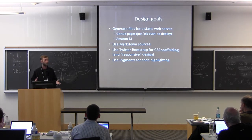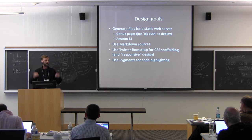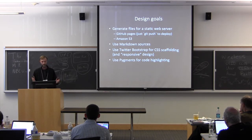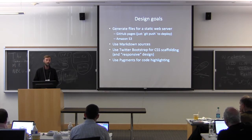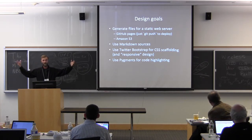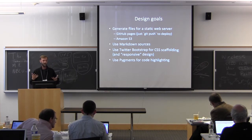The design goals were what you would expect for a static blog generator. Generate files for a static web server — for example, using GitHub Pages, you can commit and push to GitHub and they automatically appear on the web. Maybe you would copy the files to Amazon S3, or use a traditional web server like Racket web server or Apache. The other idea was to write the blog post in Markdown, which I like for writing prose. Use Twitter Bootstrap for CSS scaffolding — especially version 3, which just came out a month ago — and it's great for responsive web design, so the layout reflows on a tiny phone. And finally, use Pygments to do the highlighting of source code.